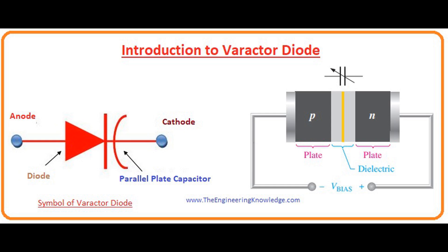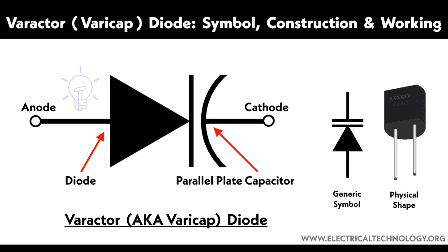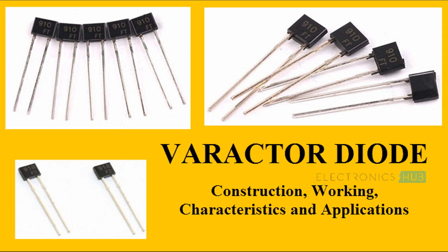Non-linear capacitance: The capacitance of a varactor diode is a non-linear function of the applied reverse voltage, which makes it useful in various tuning and frequency modulation applications. In a reverse-biased P-N junction, the region where no charge carriers are present is known as the depletion region, and the width of this region changes with the applied reverse voltage.